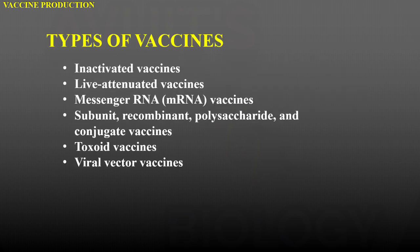Now there are different types of vaccines. First of all, there is inactivated vaccines, live attenuated vaccines, messenger RNA or mRNA vaccines, subunit, recombinant, polysaccharide and conjugate vaccines, toxoid vaccines, and viral vector vaccines.